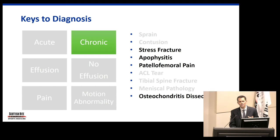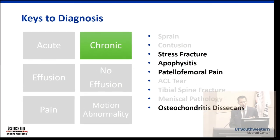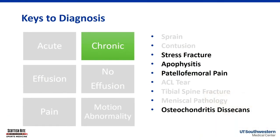If we move back to our algorithm and away from acute injuries for a moment — chronic injuries. Our list could be a stress fracture that's been sore for a while, apophysitis with pain at a growth plate, patellofemoral pain which is pain around the kneecap without a specific injury, or what we call OCD — osteochondritis dissecans. If you have chronic pain, these are the things we're thinking about.